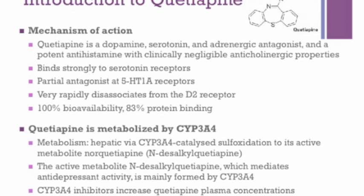This active metabolite mediates antidepressant activity and is mainly formed by the gene CYP3A4. CYP3A4 inhibitors increase quetiapine plasma concentration, and the magnitude of interaction varies depending on the potency and dose of the gene inhibitor, as well as the sensitivity of the patient.